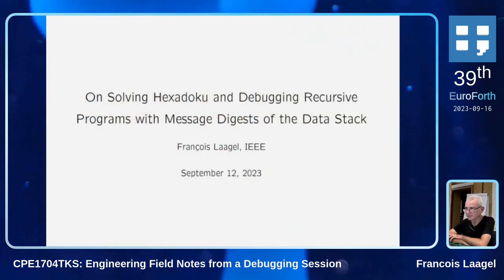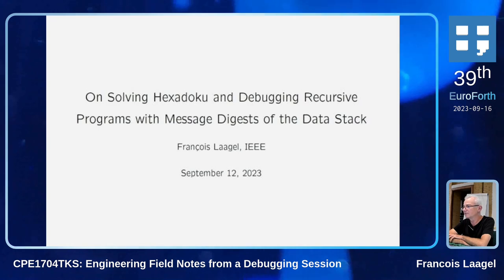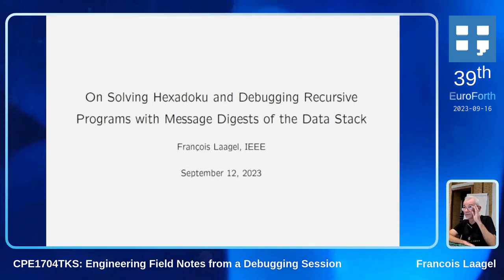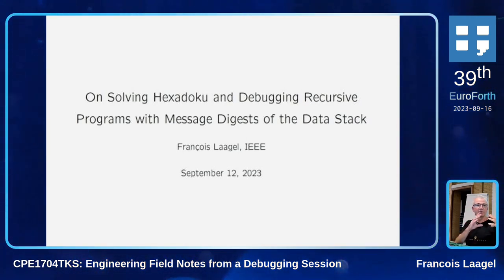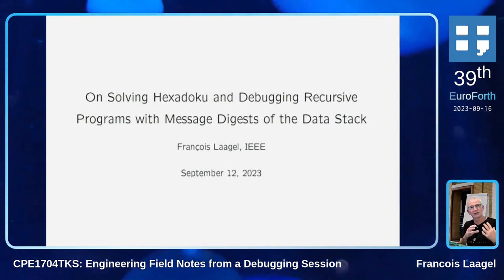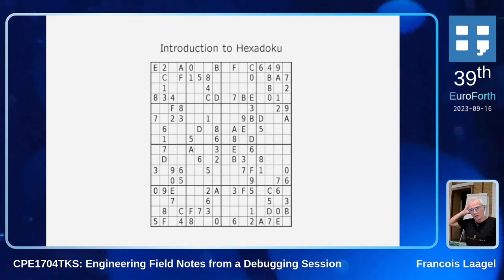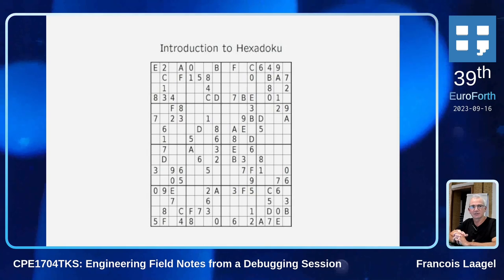There's an electronics magazine, and at the end of every issue they have a puzzle called Exodoku. Exodoku is an extended version of the regular Sudoku — not a 3x3 problem, but a 16x16, a 4x4 problem. So you end up with a grid like this one, where every spot in the grid is a hexadecimal digit.